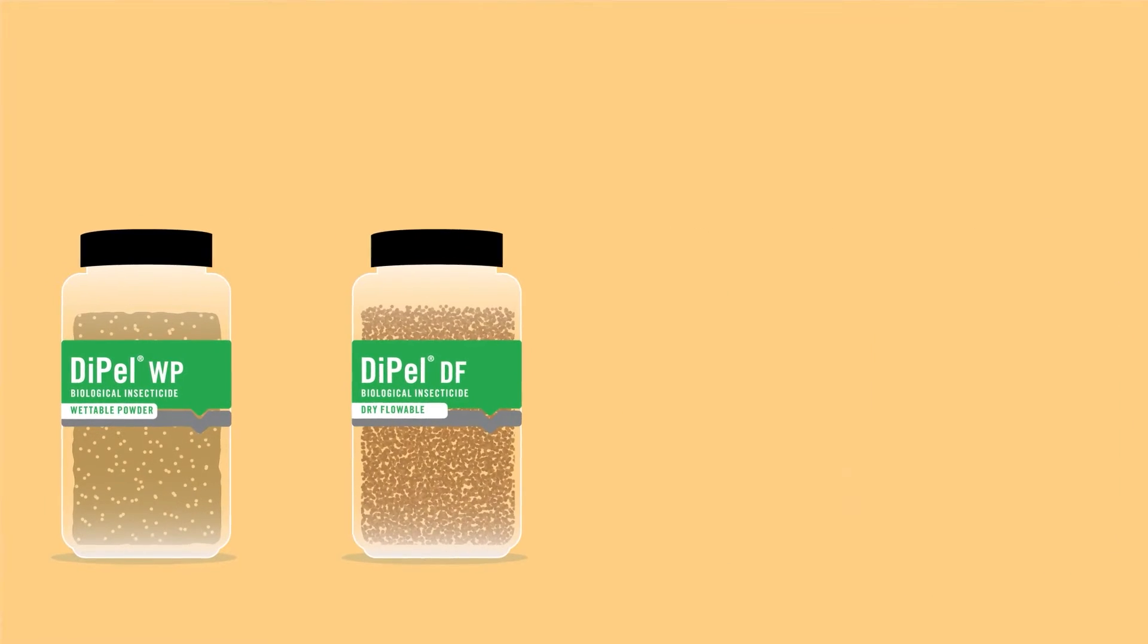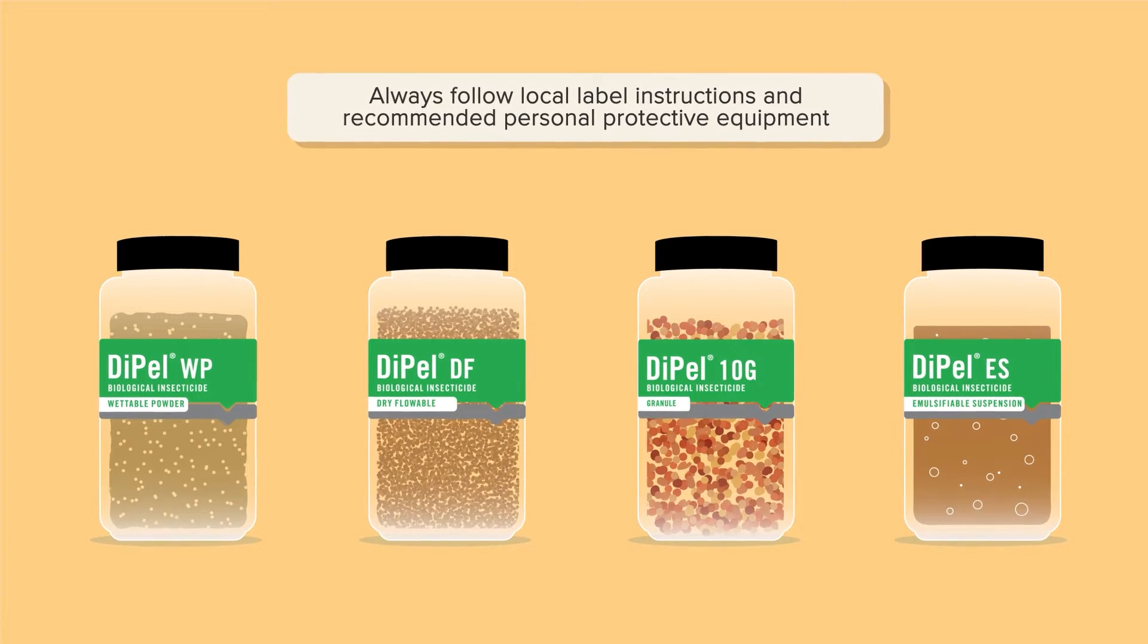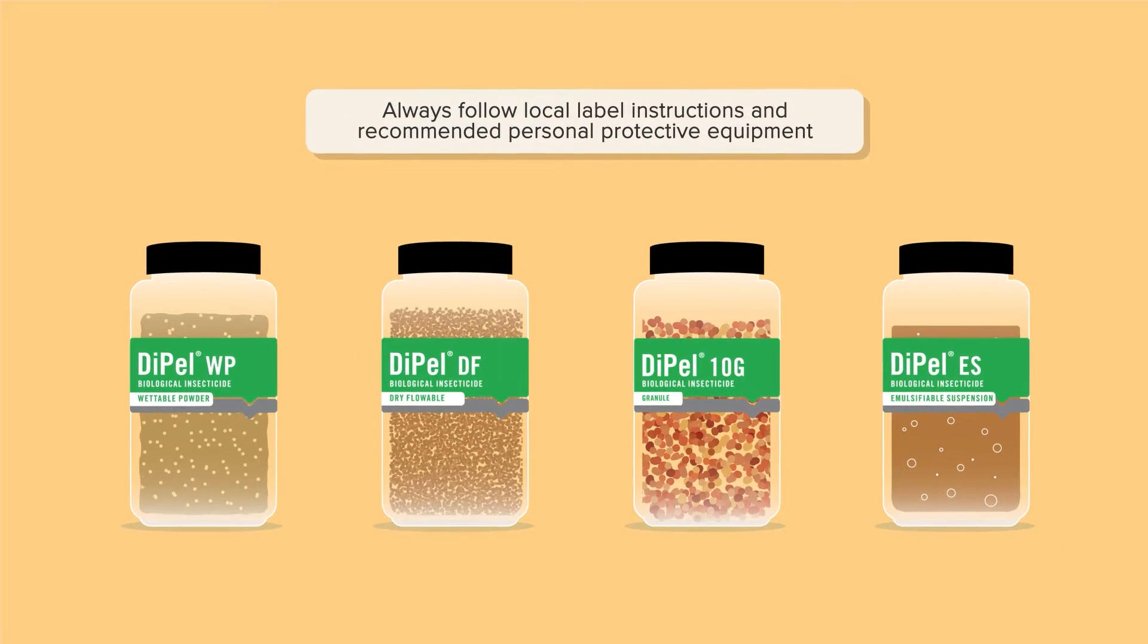Dipel Insecticide is available in several formulations: as a high-potency wettable powder, easy-to-use dry flowable granule, 10G granule, and emulsifiable suspension.